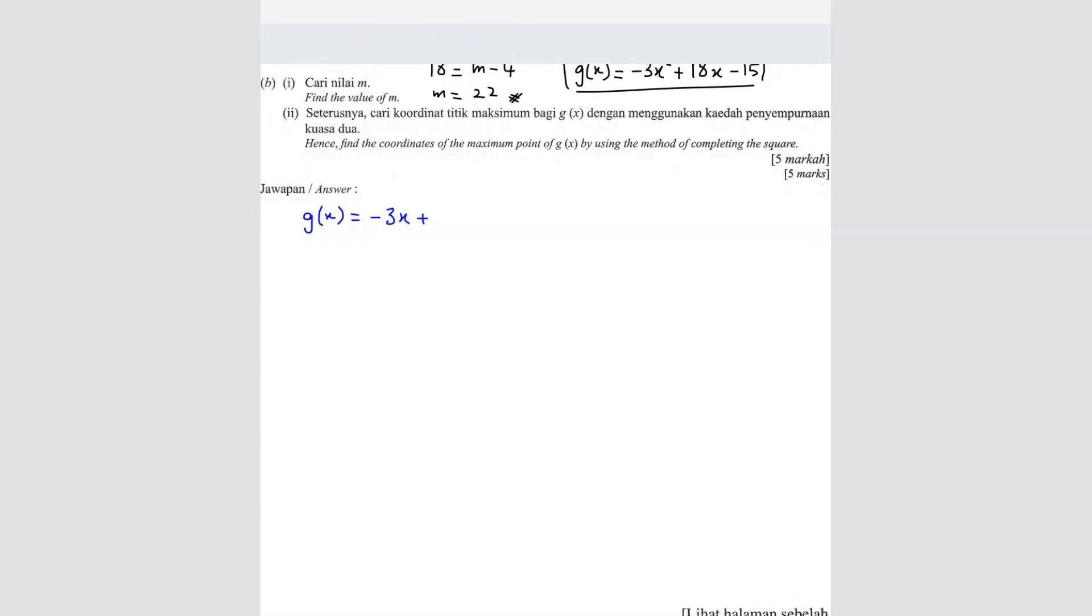Let's come back. So -3x² + 18x - 15. So first thing before we even start solving, we have to make sure the coefficient of x² is 1. So in this case, we have to factorize the -3 out. So you get x² - 6x and then + 5.